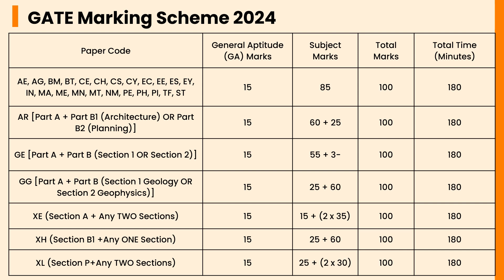Let's check the GATE marking scheme 2024. The exam duration is 3 hours (180 minutes) for each of the 29 subjects. The question paper includes 65 questions for 100 marks total. There will be 10 questions of 15 marks covering General Aptitude, testing language and analytical skills, with five questions of 2 marks and five of 1 mark. Engineering Mathematics covers approximately 13 percent of the 100 marks for papers with codes AE, AG, BM, BT, CE, CH, CS, EC, EE, ES, IN, ME, MN, MT, PE, PI, TF, and XE.